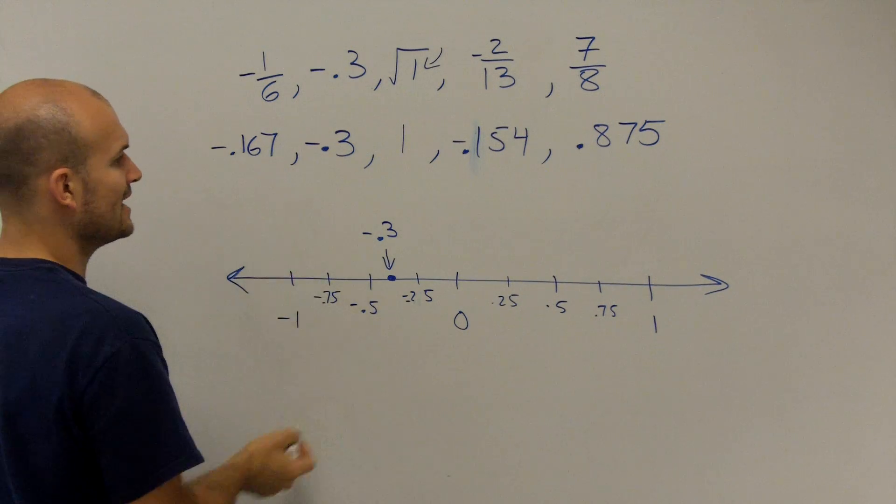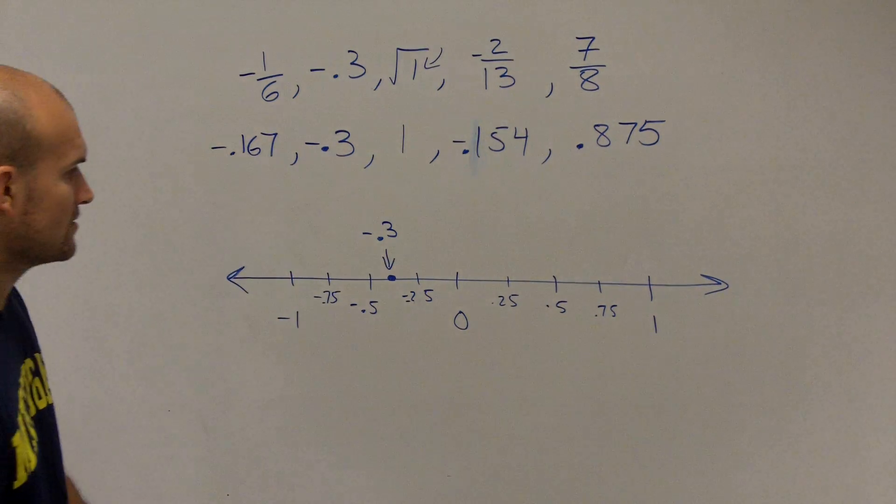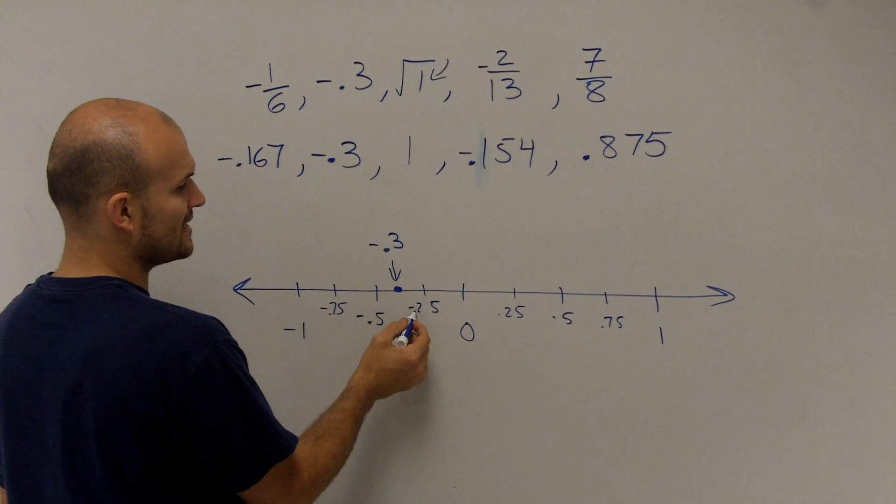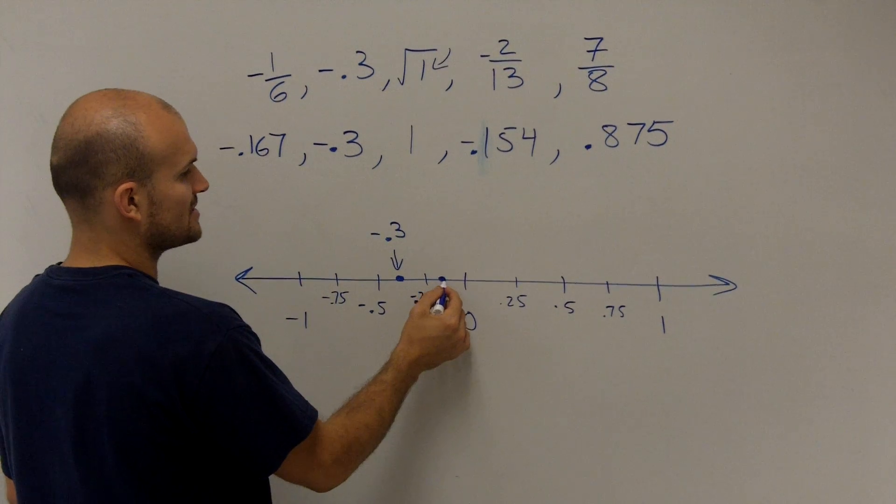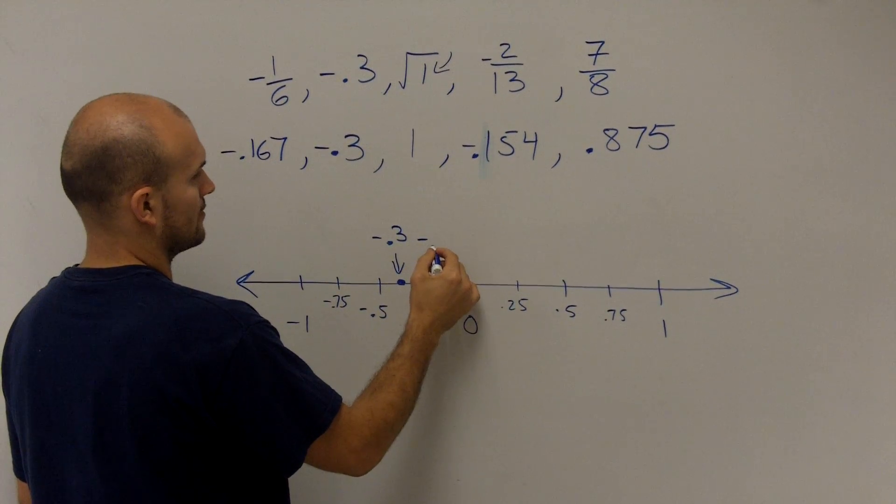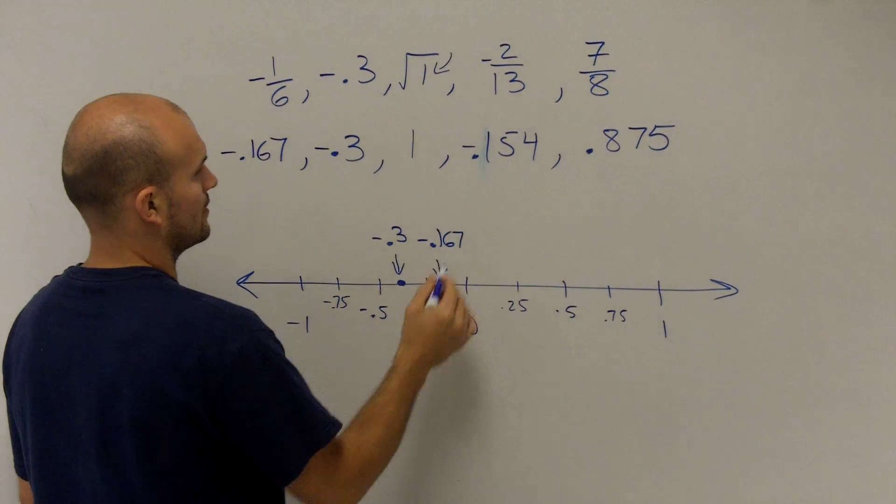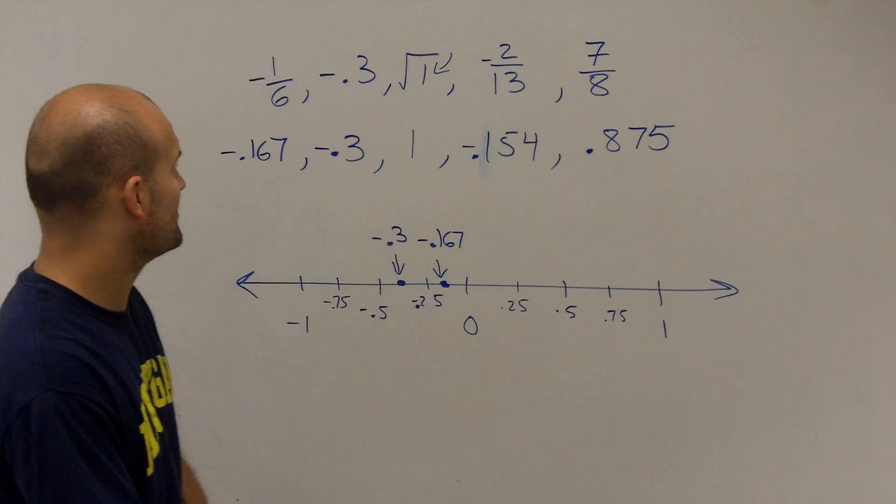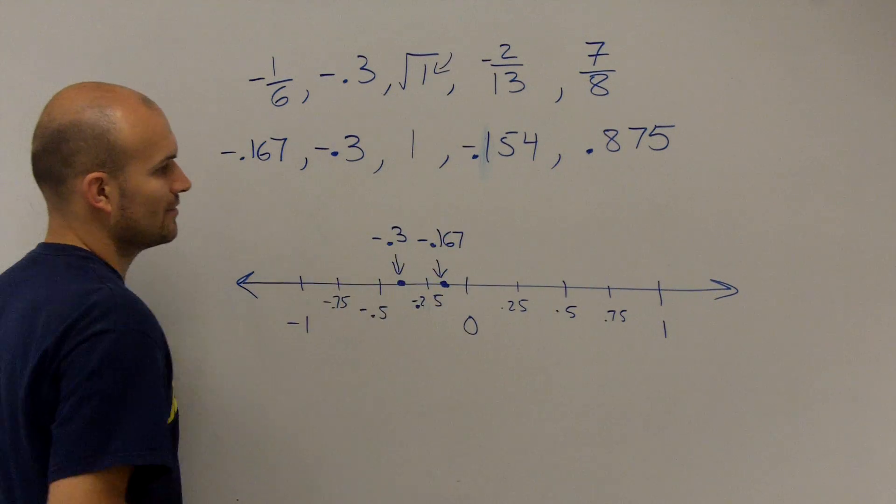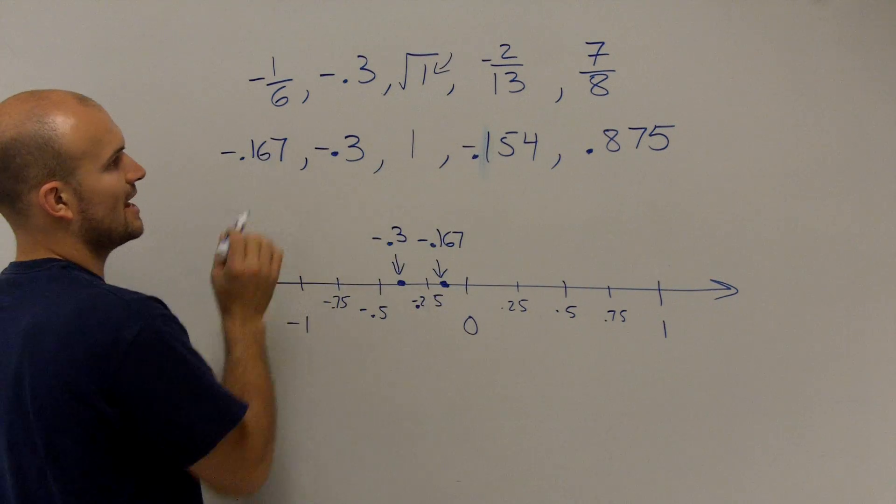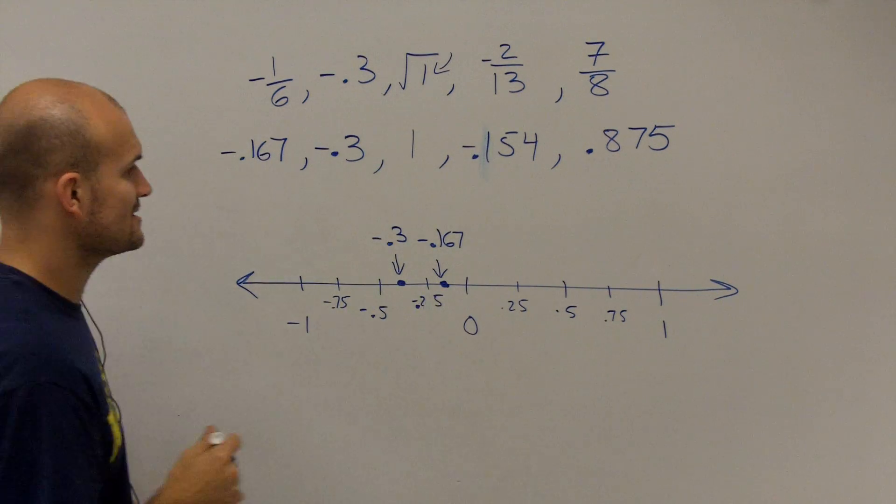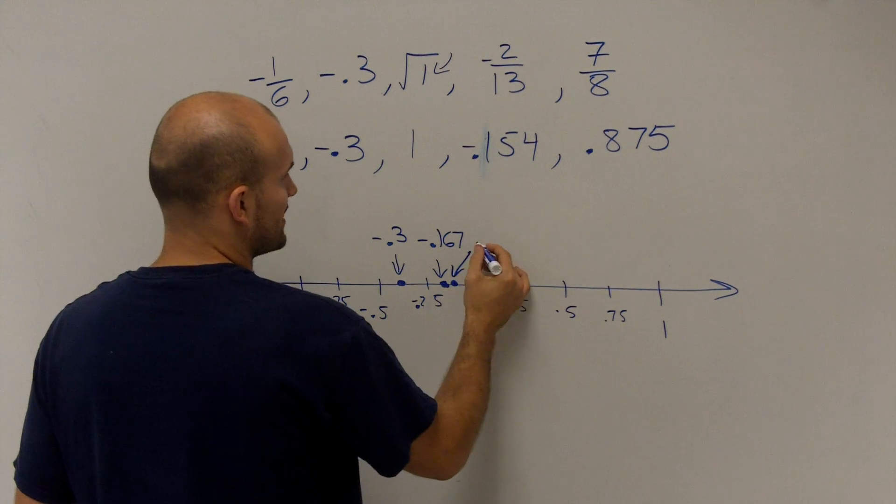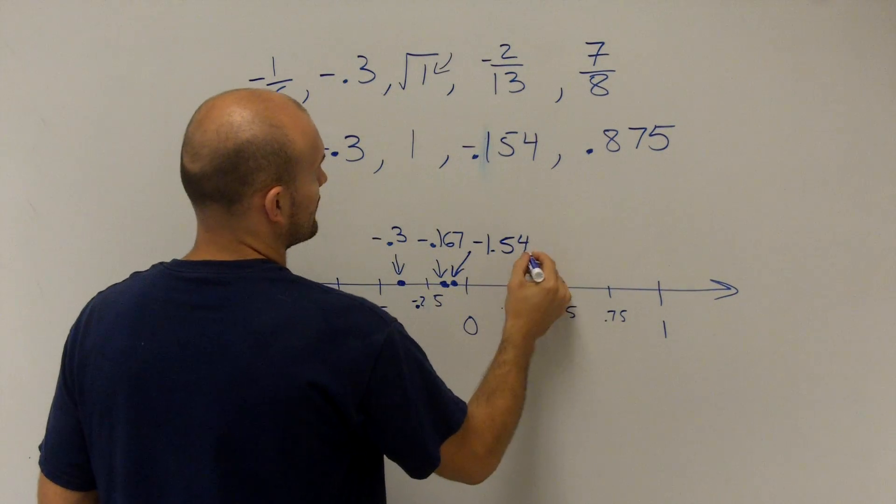Then the next smallest number would be negative 0.16. Well, 0.16 is obviously going to be bigger than negative 0.25, so that's going to be somewhere right around there. Okay, so now I'm getting into, oops, I forgot a number. Negative 0.15 is going to be the next one, which you can see is larger than negative 0.167, so that's going to be kind of smudged in there right there, which would be negative 1.54.